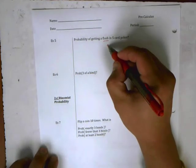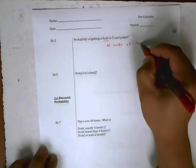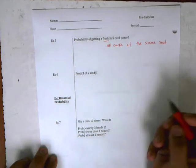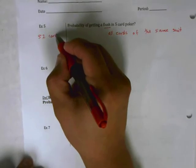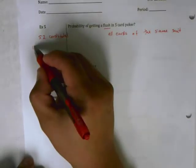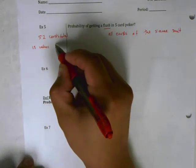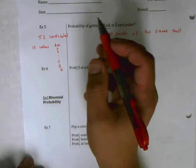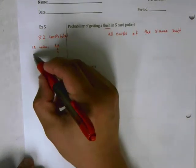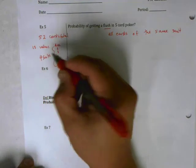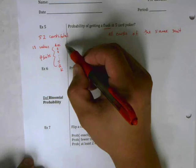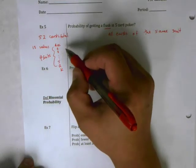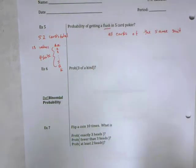Let me explain what a flush really means — these are all cards of the same suit. If you're not familiar with cards, a deck has 52 cards total, with 13 values going from ace, two, three, all the way to Jack, Queen, King. Each of these sets is called a suit, so there's an ace of hearts, ace of clubs, ace of spades, ace of diamonds, two of hearts, and so on. Look up a deck of cards online if you need a refresher.